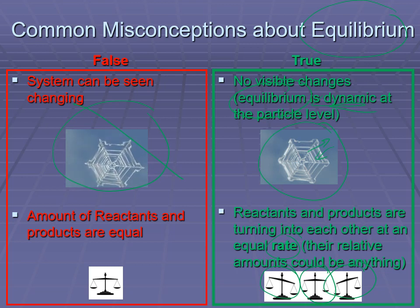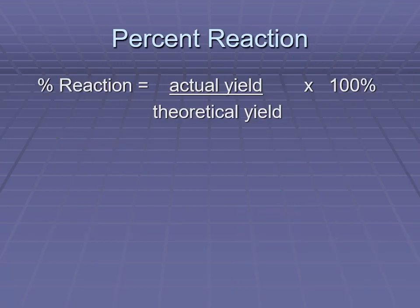Percent reaction is a useful concept to apply with equilibrium values. It's a way of comparing: if this did not establish equilibrium and went to completion with all products produced, how much would we make? Then we compare that to what was actually produced at equilibrium. Your actual yield is what actually happened; if equilibrium is established, you won't get all products produced. We compare that to the theoretical yield and express it as a percentage.